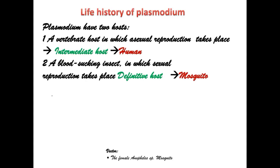Plasmodium has two hosts. A vertebrate host, in which asexual reproduction takes place, is called the intermediate host — here this is the human being. A blood-sucking insect, in which sexual reproduction takes place, is called the definitive host — here this is the mosquito.